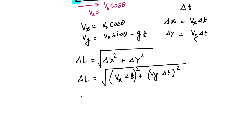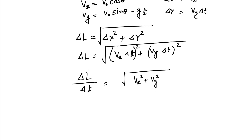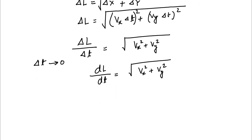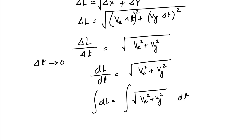Taking delta t common, we get delta l / delta t = sqrt(Vx squared + Vy squared). As delta t tends to 0, this becomes dL/dt = sqrt(Vx squared + Vy squared). Integrating, dL = sqrt(Vx squared + Vy squared) dt, and integrating this gives the total trajectory length.